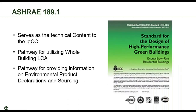ASHRAE 189.1 is a little bit different from Green Globes and LEED in that it is written in code-enforceable language and serves as the technical content of the International Green Construction Code that the International Code Council puts out. The current version has very similar requirements for sourcing, EPDs, and whole building LCA, but it has them set up as two compliance paths. So instead of the approach taken by Green Globes and LEED where you can earn points separately, you basically have to choose in 189.1 whether you want to pursue the sourcing pathway that includes EPDs and recycled content, or if you want to do a whole building LCA.